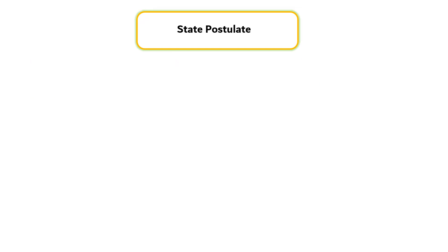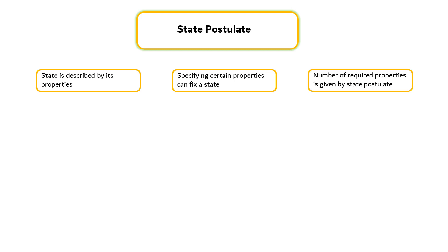State postulate. The state of a system is described by its properties. Once a sufficient number of properties are specified, the rest of the properties assume certain values automatically. That is, specifying a certain number of properties is sufficient to fix a state. The number of properties required to fix the state of a system is given by the state postulate.